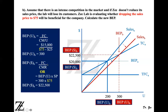For break-even point in dollars, you can divide fixed cost by contribution margin ratio, or multiply the break-even units of 300 by the new selling price of $75. So 300 times $75 is $22,500. You need to sell $22,500 worth of goods to reach break-even point. Both the dollar and unit break-even have gone up, suggesting that dropping the price is not a good idea.